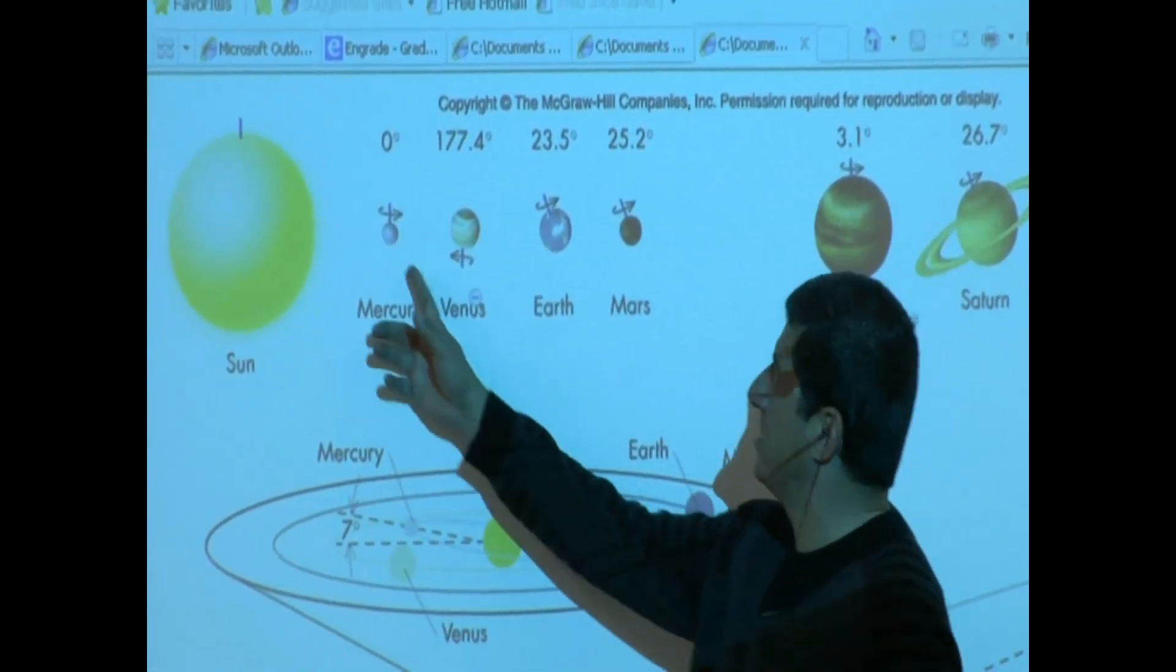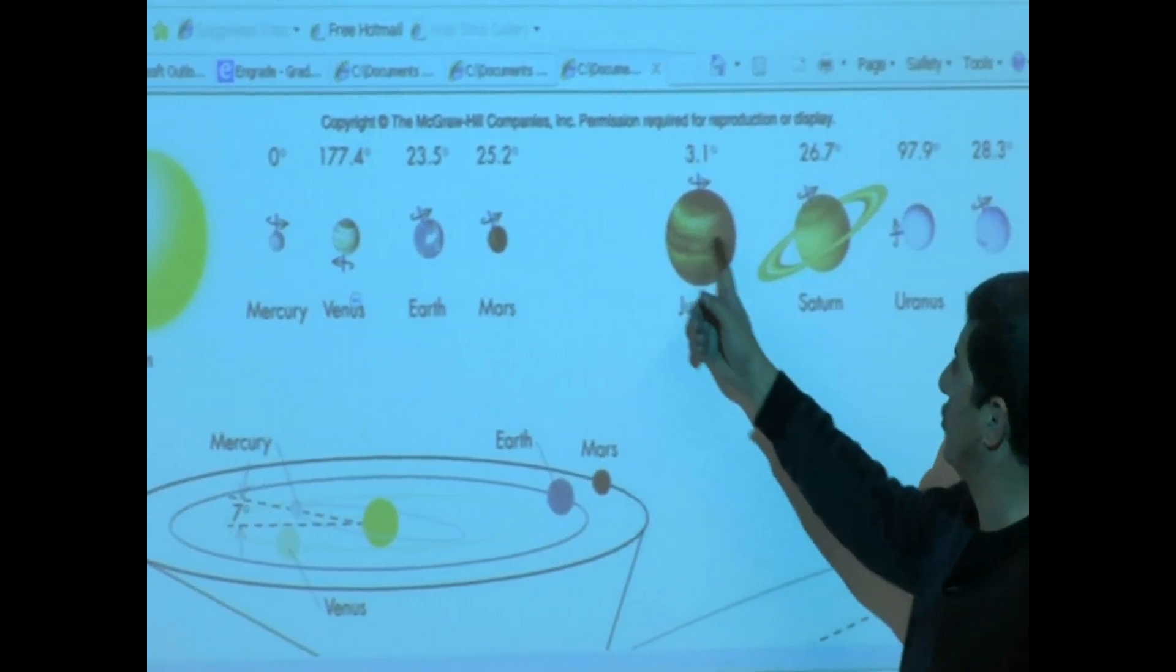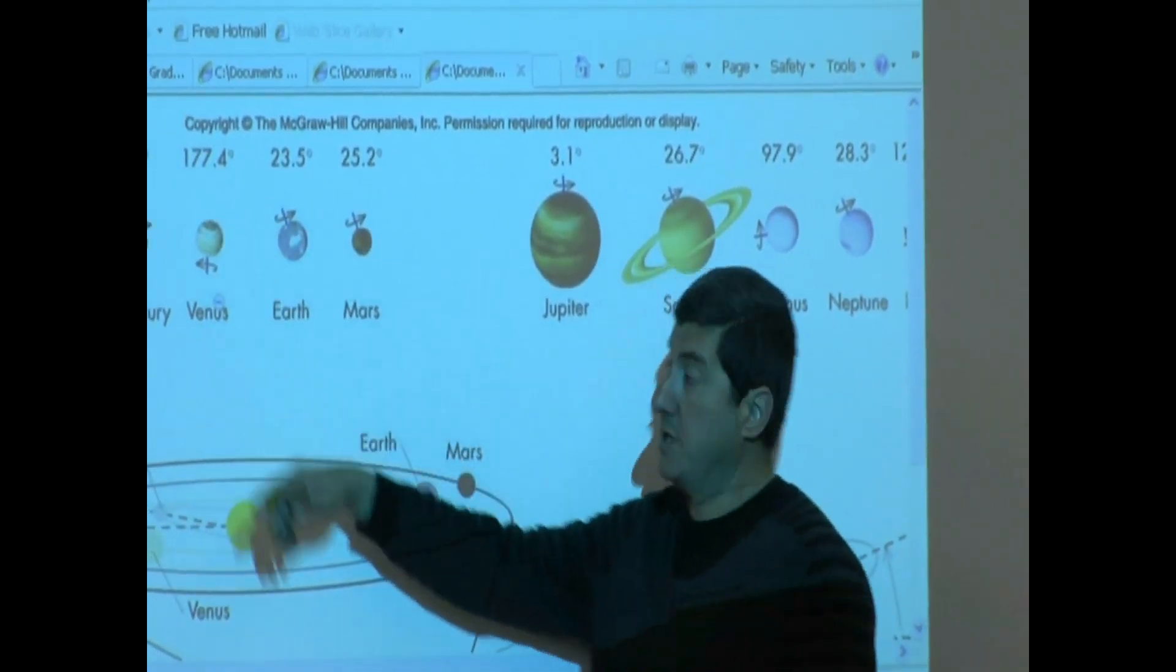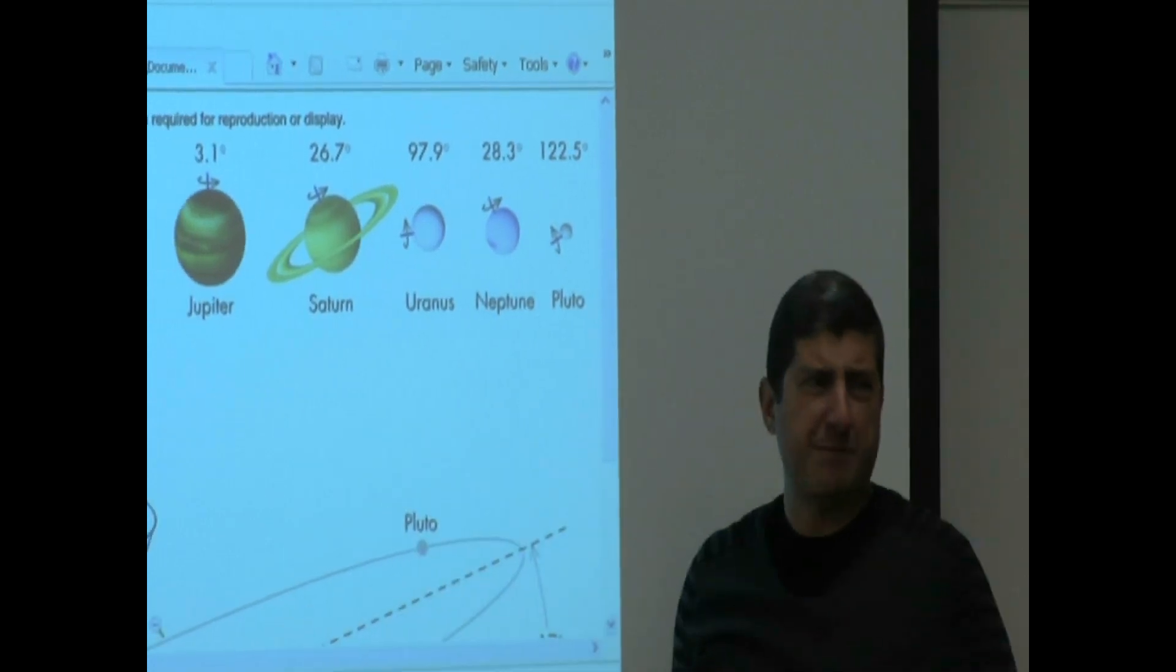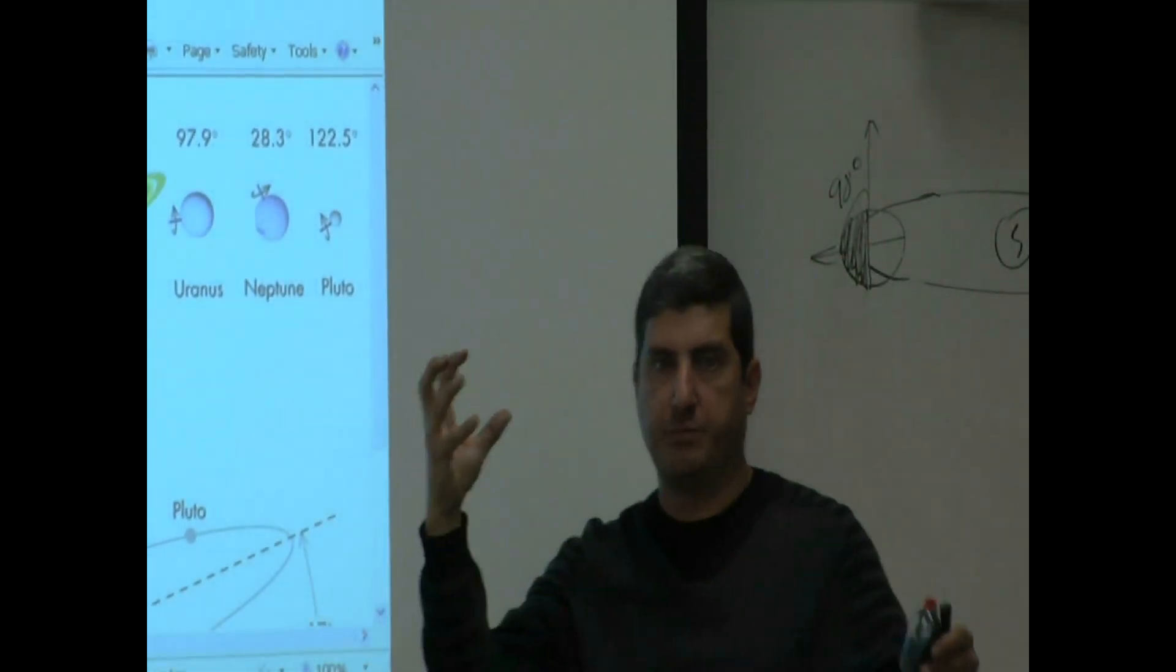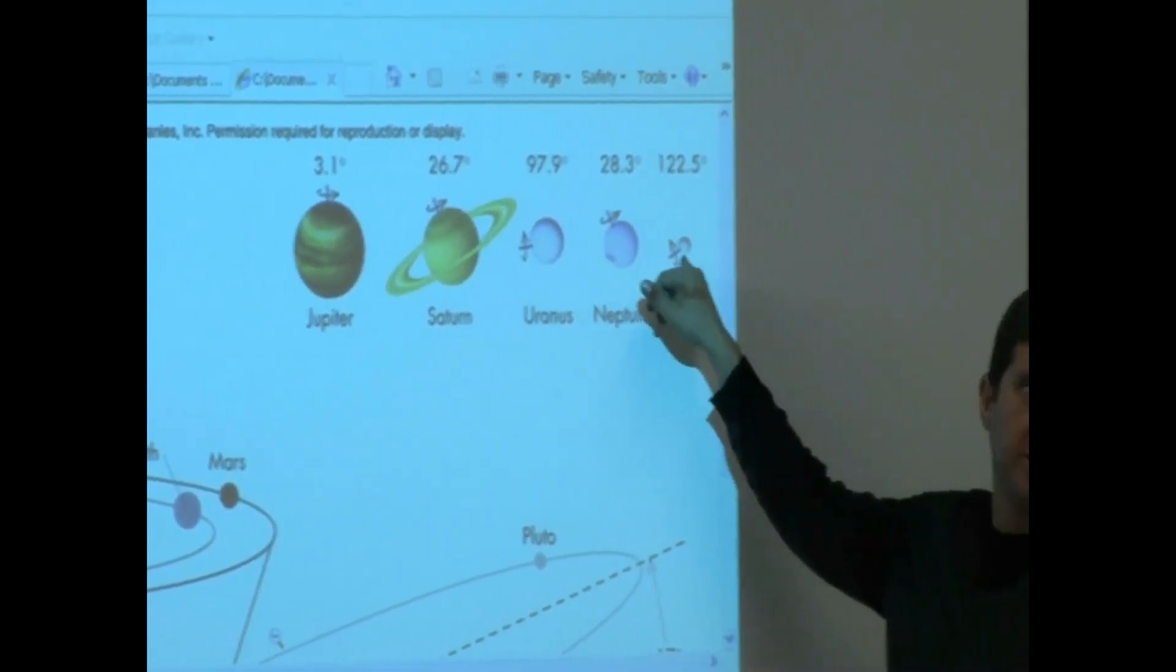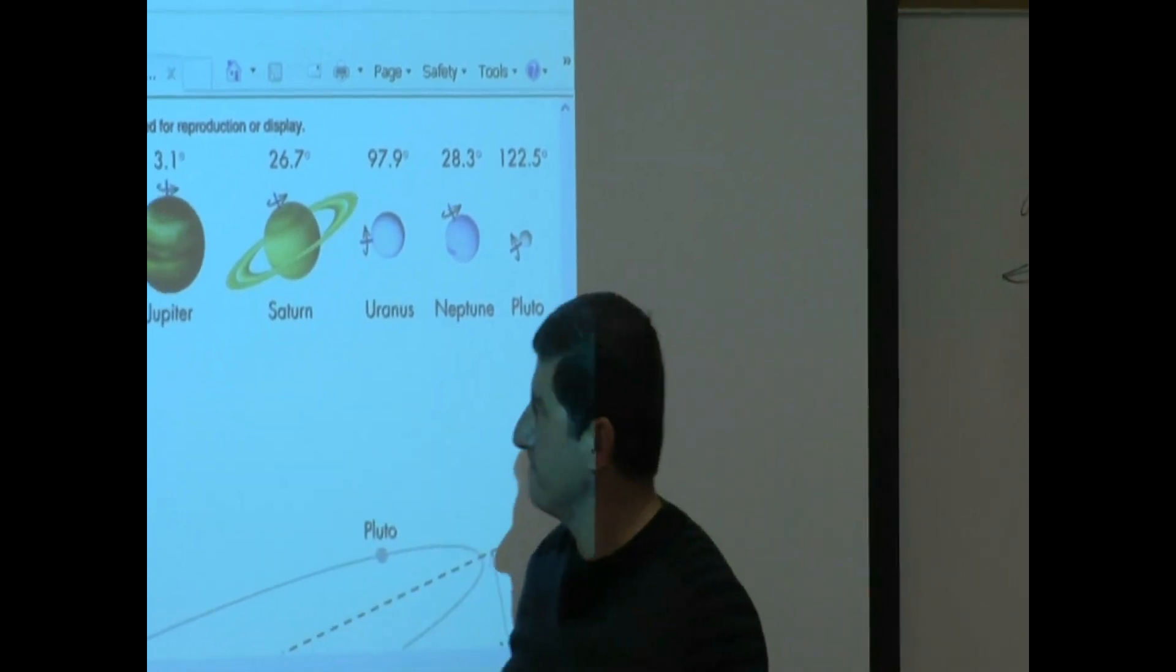Take a look at this here. Mercury's tilt, zero. Venus's tilt, 177. Earth, 23. Mars, 25. Jupiter, 3 degrees. Severe seasons? No. No seasons. Saturn, 26, close to Mars and Earth. Uranus, 97.9. See how it's tilted? Probably what happened was in its early formation, something must have hit Uranus and tilted it. Neptune, close to Mars and Earth. Pluto, another weird thing. It's got a weird tilt of 122, so it's kind of similar to Uranus.